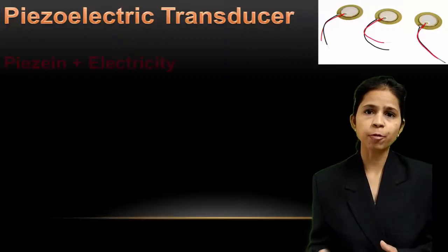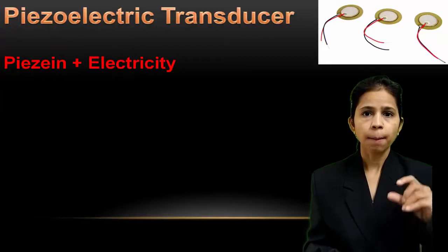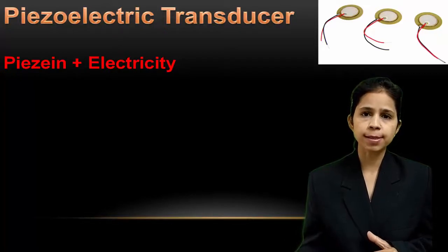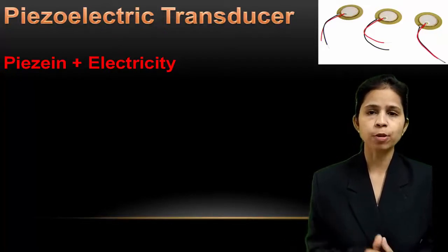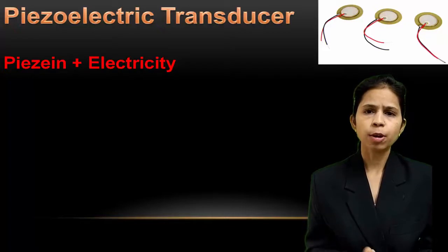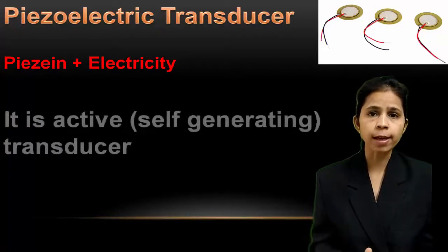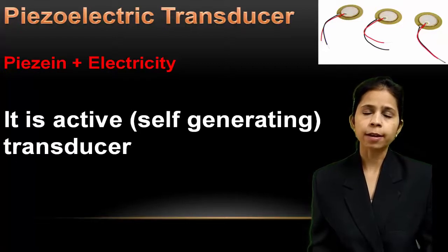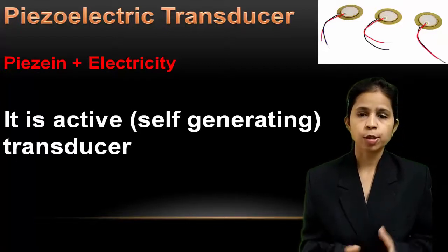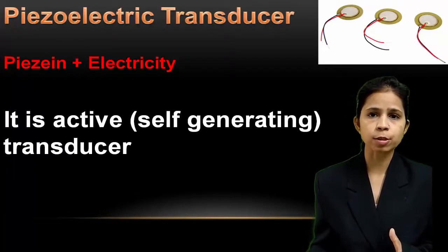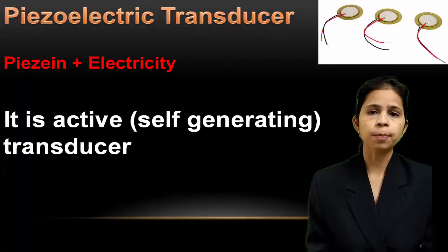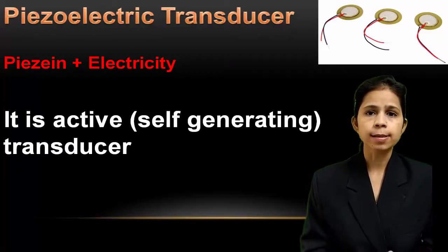The word piezoelectric is derived from the Greek word piezo. Piezo means to squeeze or to press. So, electricity which is produced due to squeezing or pressing is piezoelectricity — hence the name piezoelectric transducer. Piezoelectric transducer is an active transducer because it detects a physical quantity — that may be a force, pressure, stress, or anything — and converts it directly into voltage. It is a self-generating transducer and does not require an external power source to convert the physical quantity change into an electrical signal.